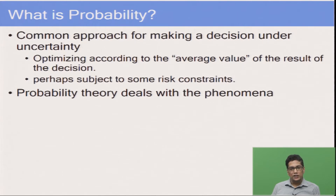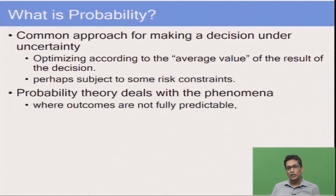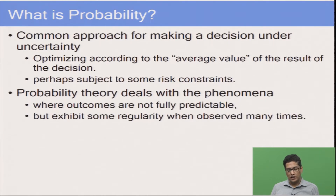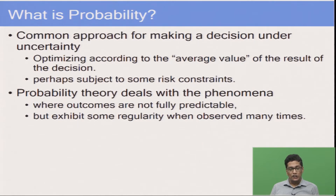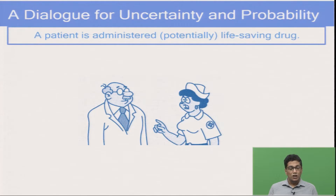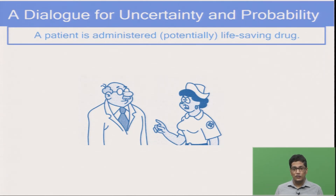Probability theory deals with phenomena where outcomes are not fully predictable but they exhibit some regularity when observed many times. We want to look at experiments where outcomes are uncertain but we know that if those experiments are repeated multiple times there is some pattern in the long-term averages. To understand what exactly probability means and how we interpret it for physical phenomena, I am going to take a dialogue about uncertainty and probability.